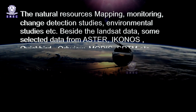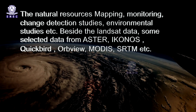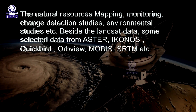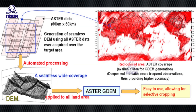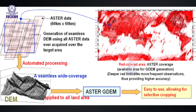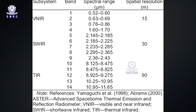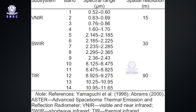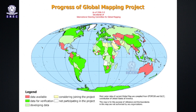Besides Landsat, selected data from ASTER, IKONOS, QuickBird, OrbView, MODIS, SRTM, and others are also available. ASTER (Advanced Spaceborne Thermal Emission and Reflection) data is available from Terra Satellites at the NASA website. The data captured is broadly divided into three categories based on data size and study objectives: local observation, regional monitoring, and global mapping.